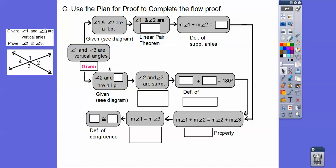These two branches are the same thing except for different numbers. Angles 1 and 2 are a linear pair. Angle 2 and angle 3 are also a linear pair, so let's put angle 3 in right there. It says 1 and 2 are supplementary, and similarly 2 and 3 are supplementary. The reason is the linear pairs theorem — definition of linear pairs or linear pairs theorem.